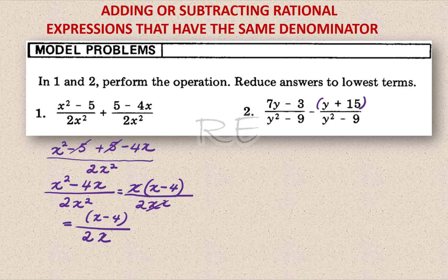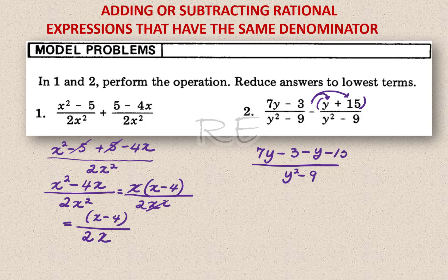For number 2, we need to remember to subtract the whole thing. We keep 7y minus 3 over y squared minus 9, and subtract y plus 15. We distribute the negative sign over y minus 15.